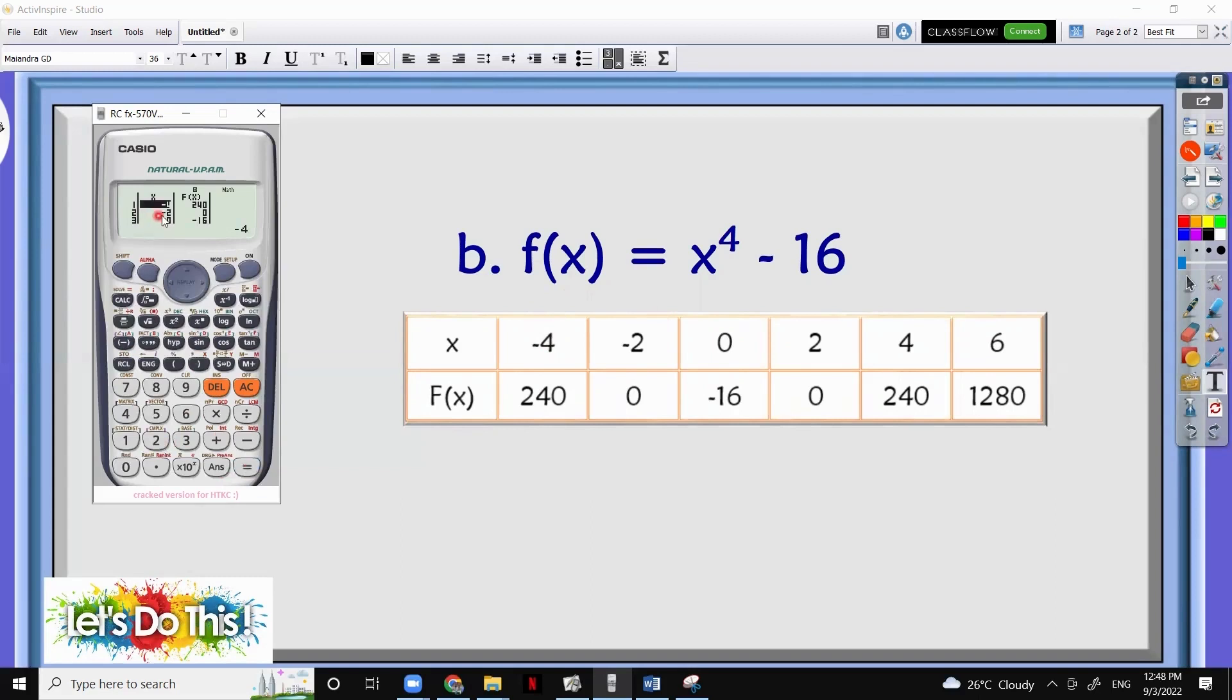So we already got this. Negative 4, we got 240. Negative 2, we got 0. 0 is negative 16. 2 is 0. 4 is 240. And 6, we have 1,280. All right? I hope this helps. Thank you.